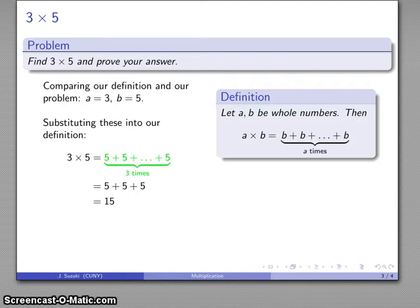And so again, in this particular case, we're going to go back to our definition. 3 times 5 is the sum of 3 5s. Here it is. Here it is. And then there's my 15.